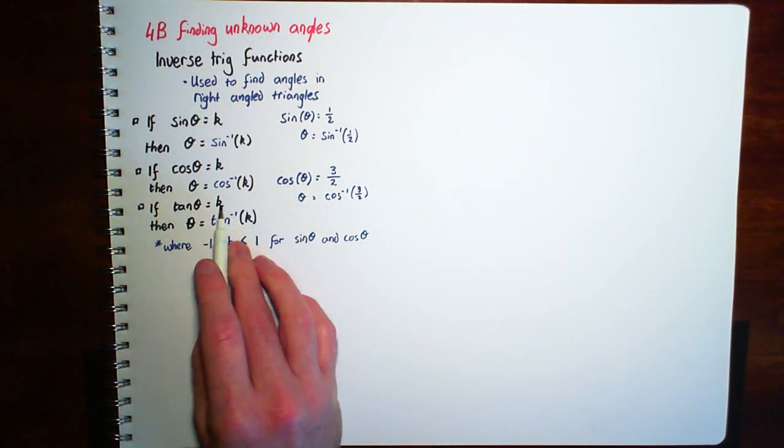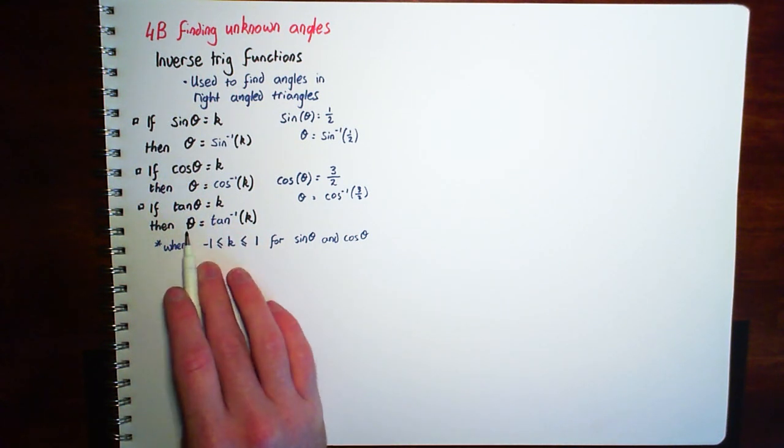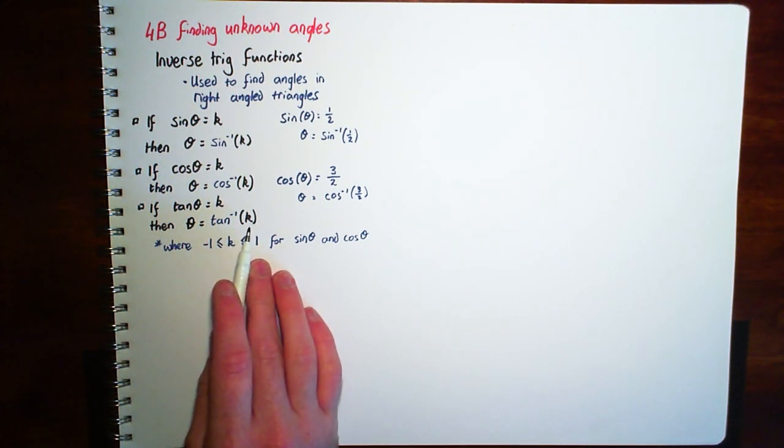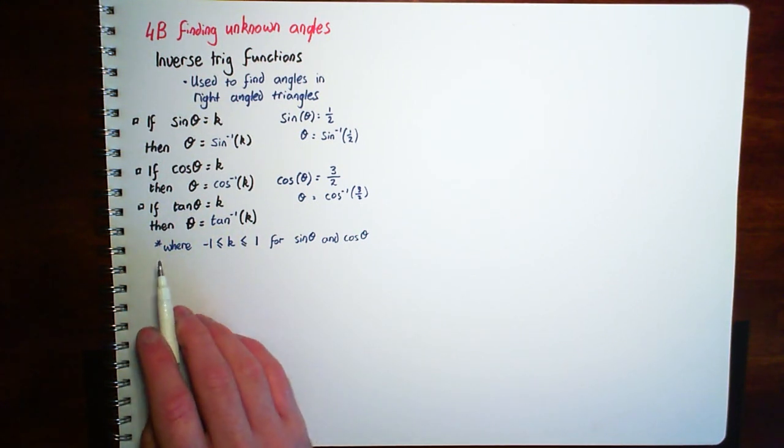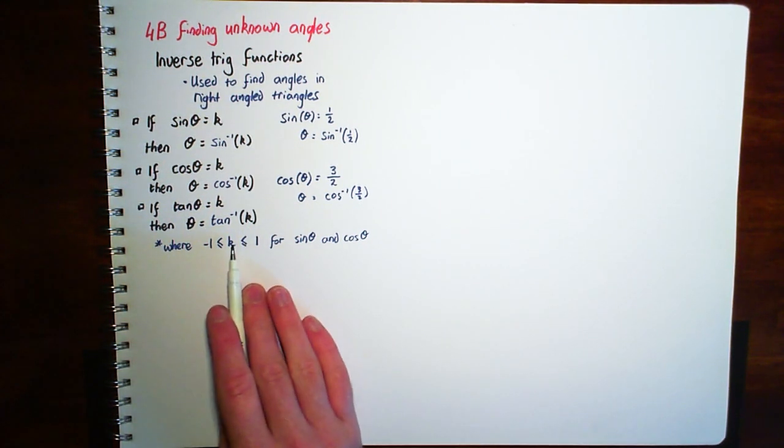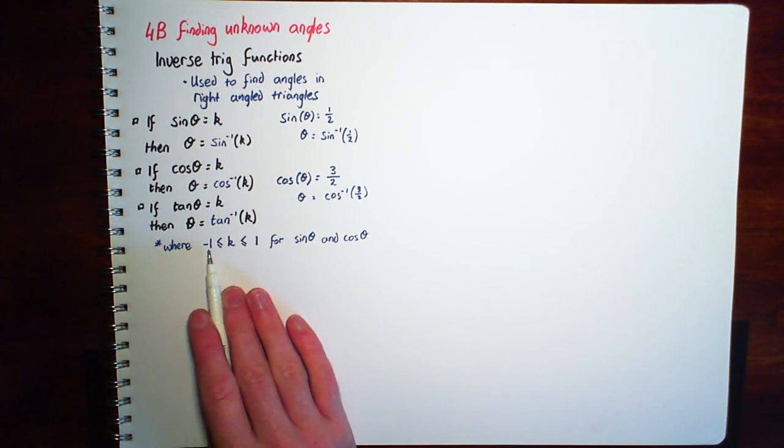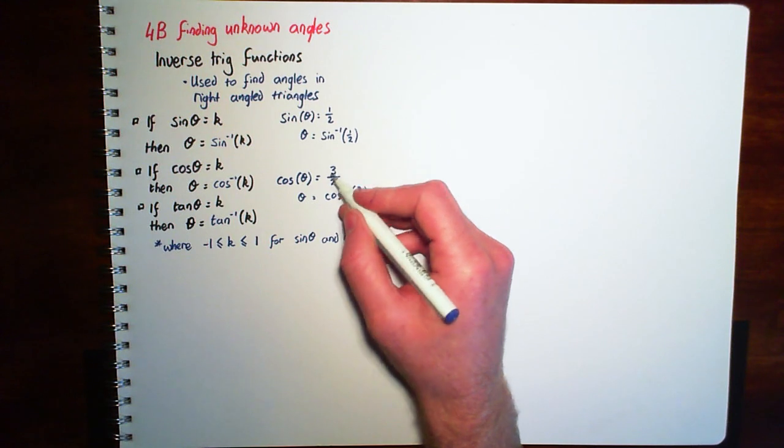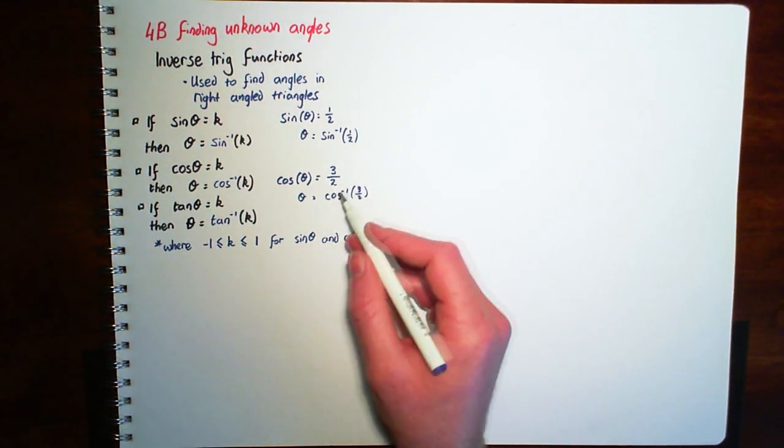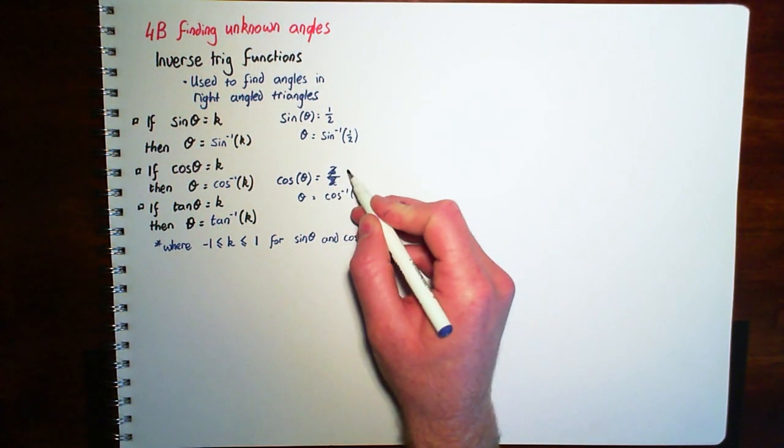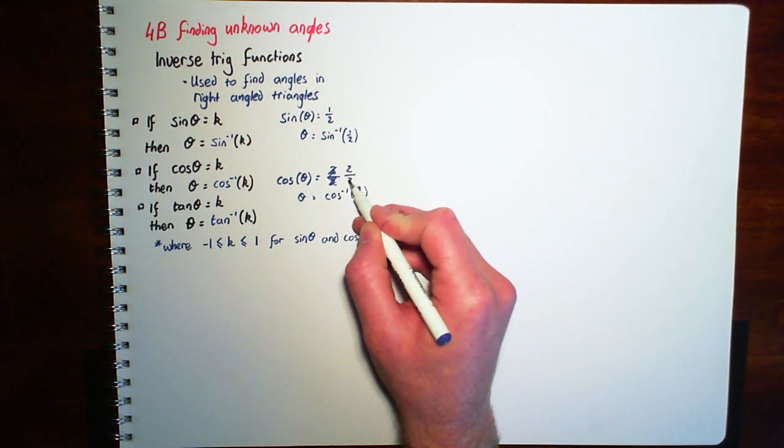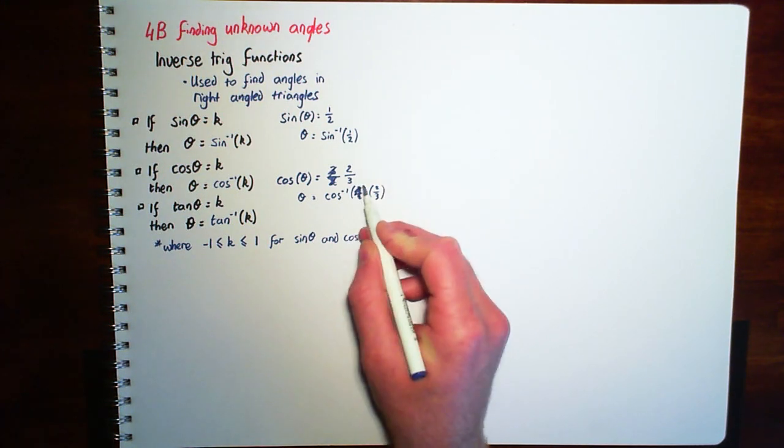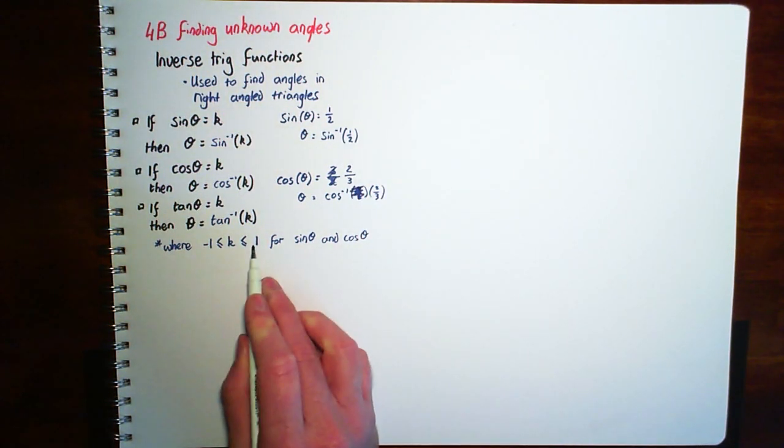If tan of theta equals a constant, then we've also got theta is the inverse of that number. Now we've also got this little asterisk here. The number k has to be between minus one and one. So I've actually made this one up, 3 over 2. That's more than one. So I'm actually just going to swap them around. 2 over 3. Okay, so it has to be between minus one and one.